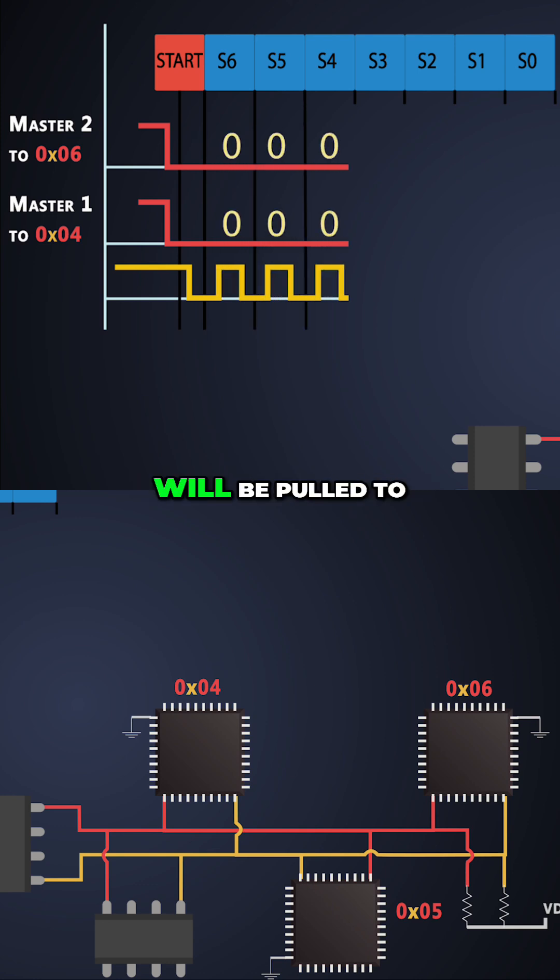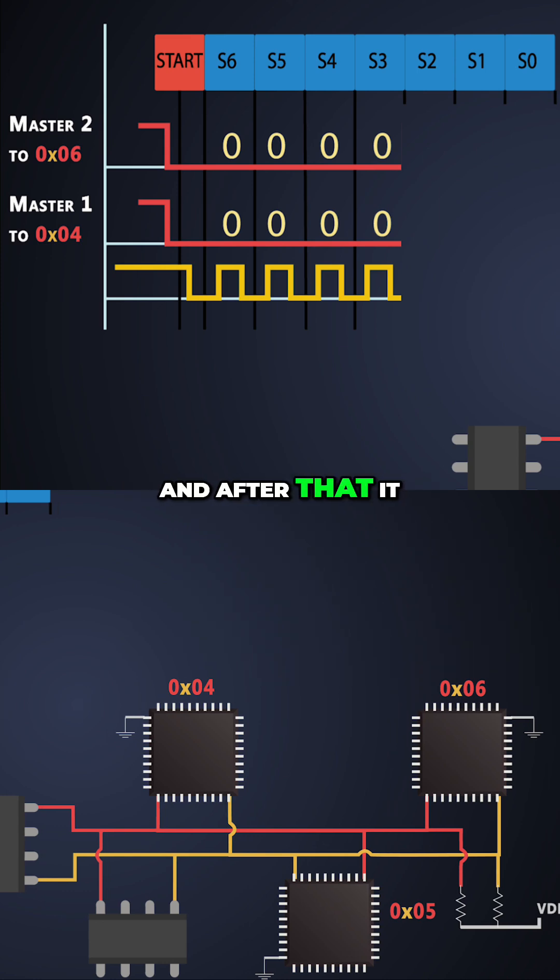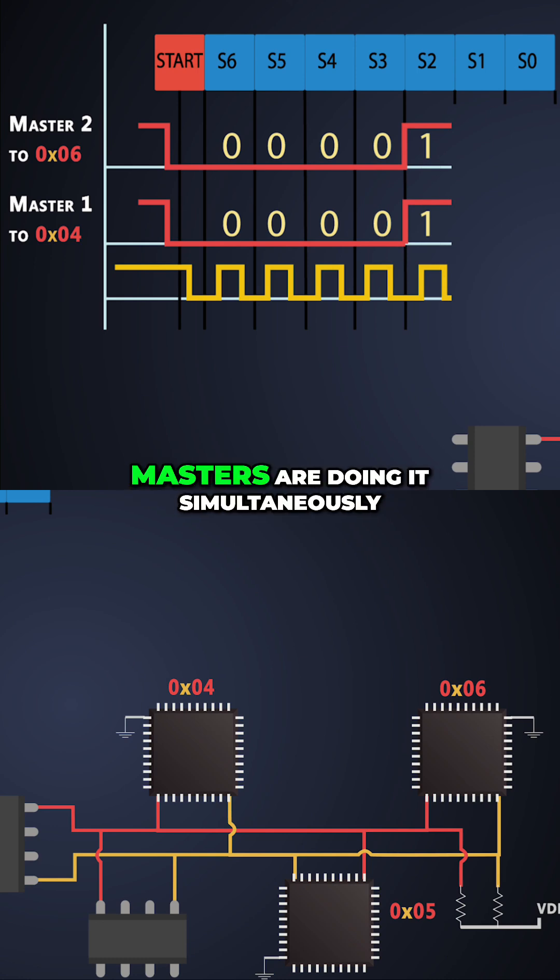Initially the SDA line will be pulled to low for four consecutive clock cycles after the start bit, and after that it will change the status to logic high, denoting one on the bus because both of these masters are doing it simultaneously.